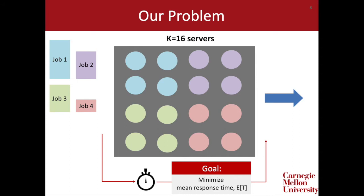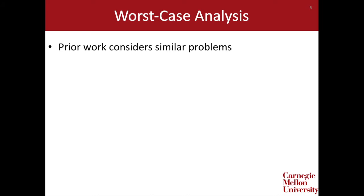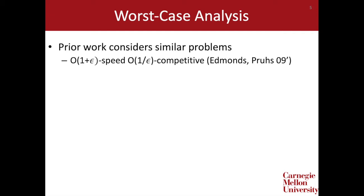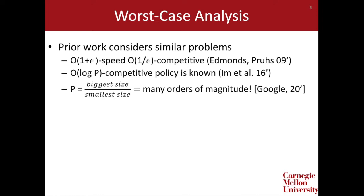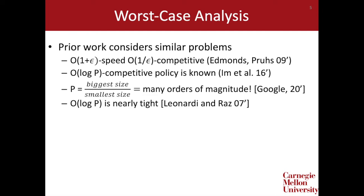Prior work has considered similar problems. In particular, a 2009 paper provides an O(1 + epsilon) speed O(1/epsilon)-competitive policy. Without using speed augmentation, a 2016 paper provides an O(log p)-competitive policy, where p is the ratio of the largest job size to the smallest. Unfortunately, this ratio p can be many orders of magnitude in practice. To make matters worse, the O(log p) competitive ratio is nearly tight to a lower bound provided by Lennarty and Ross in 2007. So the question is: given this strong lower bound, how should we make progress?